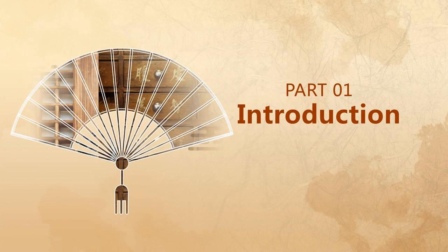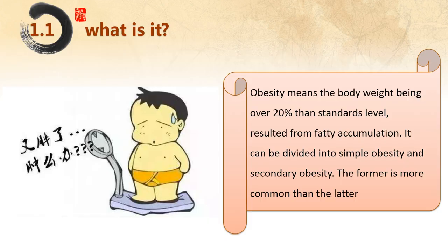Part one: introduction. Obesity means the body weight being over 20% of the standard level. Resulting from fatty accumulation, it can be divided into simple obesity and secondary obesity. The former is more common than the latter.